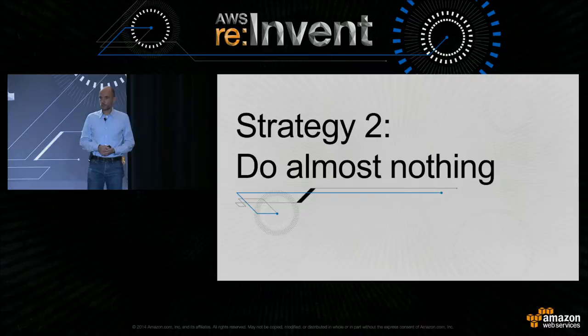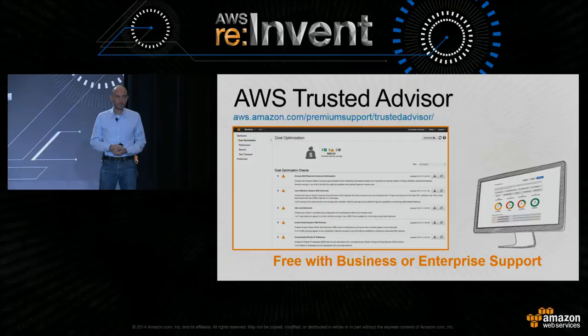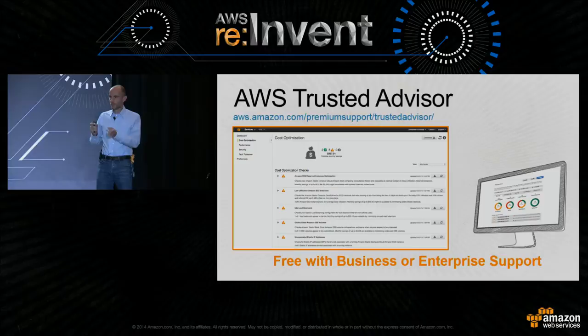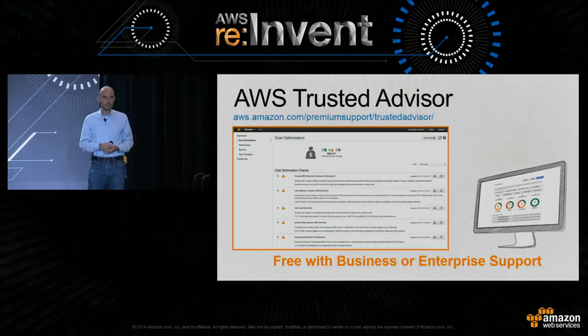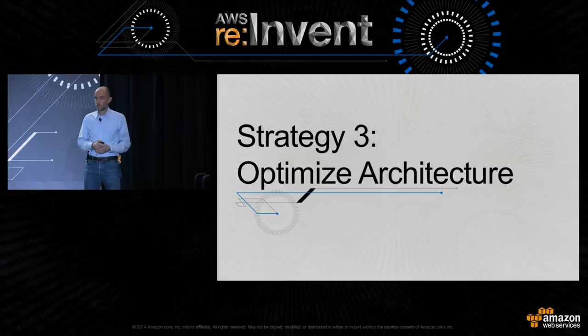The second strategy could be to do almost nothing. If you book AWS business support or enterprise support, you get access to AWS Trusted Advisor for free. Trusted Advisor will scan your infrastructure and give you a report with new ways to save money. Spending on support — 10% or less of your bill — gets you Trusted Advisor, which often pays for itself so you basically get support for free.